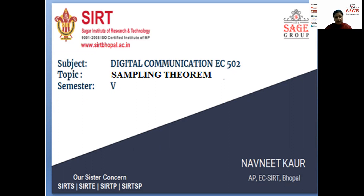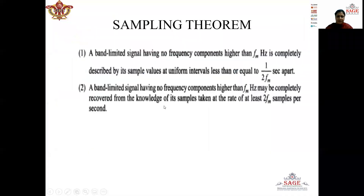We already know that sampling is used to convert a continuous time signal into a discrete time signal. Sampling theorem defines the sampling frequency and the sampling interval when we are doing sampling of a continuous time signal. According to the sampling theorem there are two statements. A band-limited signal having no frequency components higher than FM hertz is completely described by sample values at uniform intervals less than or equal to 1/(2FM) seconds apart.